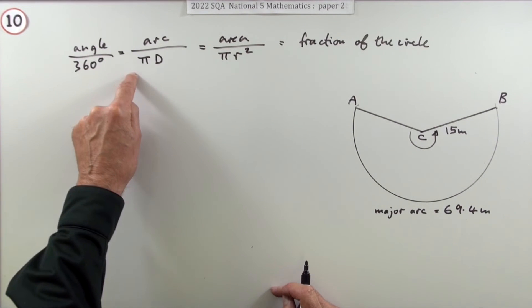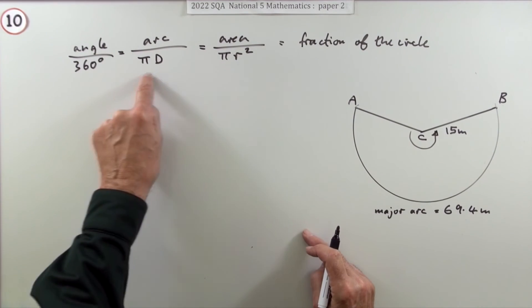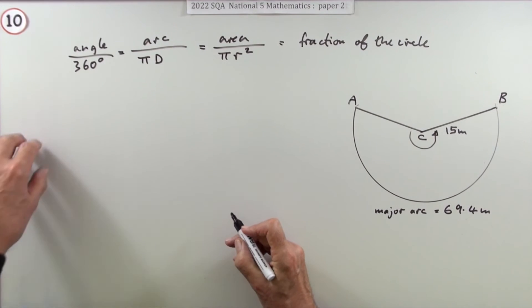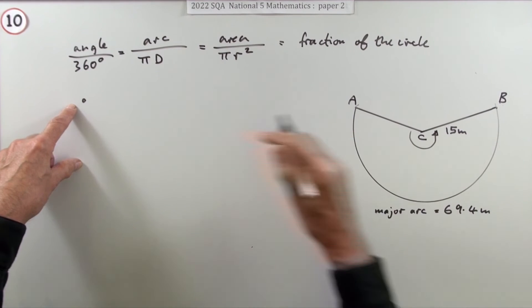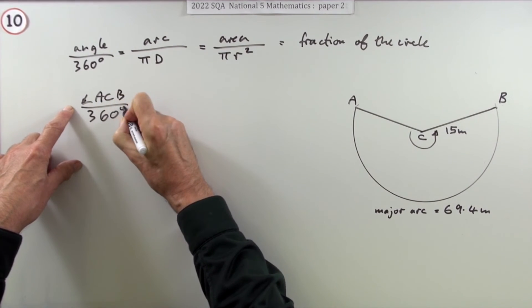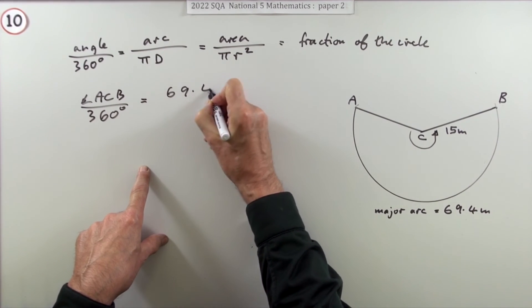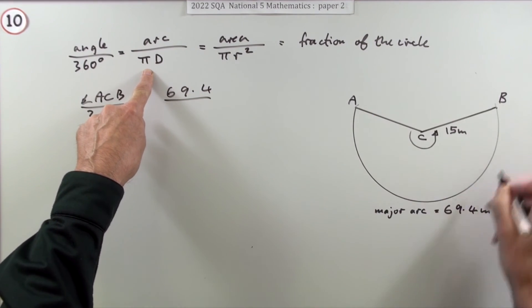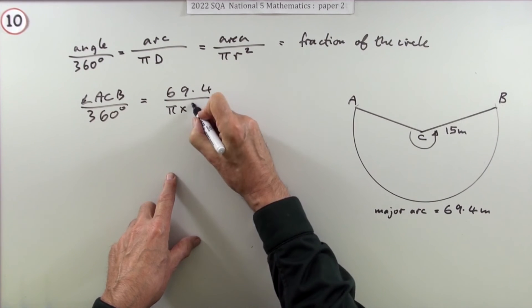I know the arc, so I know both parts here because I know the radius. You're always going to know all these denominators. So that's the pair I'm going to use then. I'm just going to write that down: angle ACB over 360 will equal the arc, which is 69.4, divided by the calculation for the complete arc - the circumference, which is πd, which is π times 30, since the radius is 15.